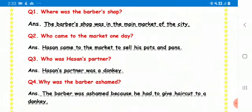Hassan made a plan and trapped him in such a way that he had to give haircut to the donkey. And finally, he realizes his mistake and returns Hassan's donkey to him. That's how the story ends.